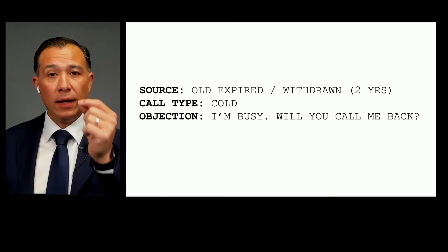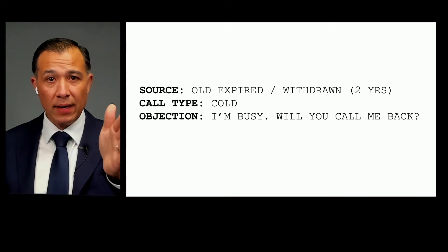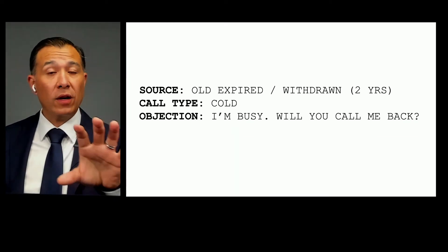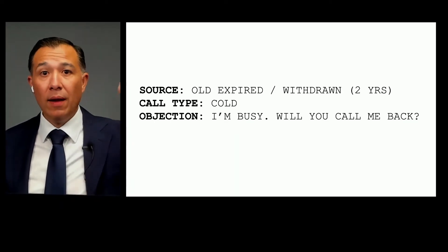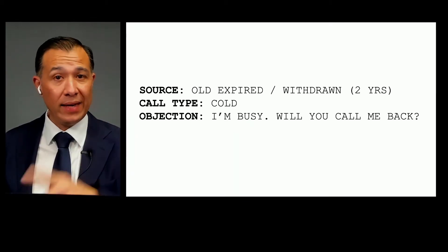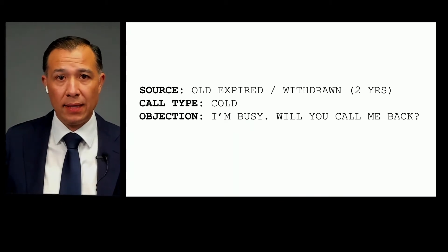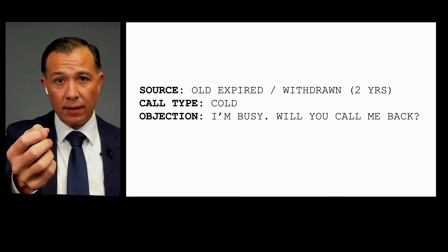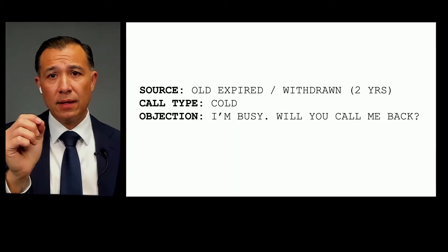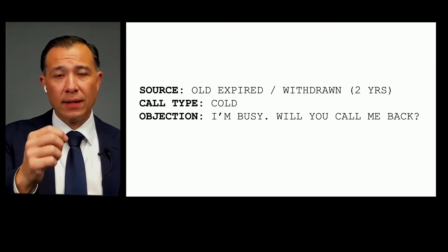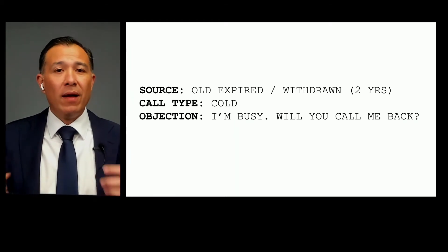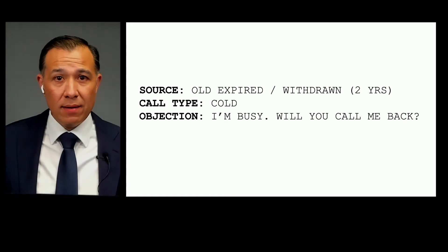There's gold in them hills. There are people who were planning on selling their home when we all got grounded, and for whatever reason they haven't come back on the market. Their motivation may still be there — they still may want to sell, but they may be waiting to see what's going on. If you haven't learned how to rebuttal 'I want to sell but there's nothing to buy,' go to my YouTube channel. When you rebuttal one objection, all it does sometimes is get you another, but you're working your way through them.